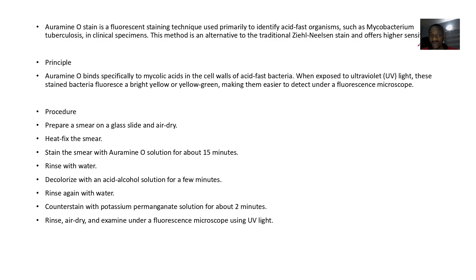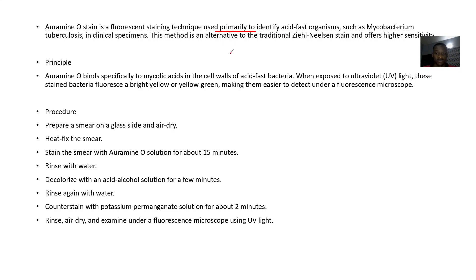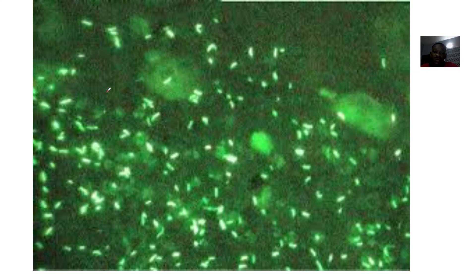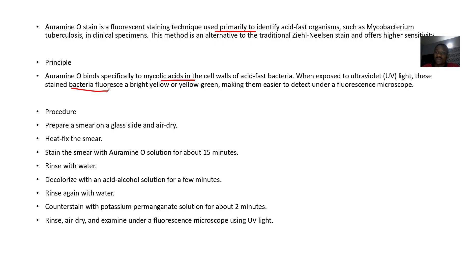The Auramine O stain is a fluorescent staining technique used primarily to identify acid-fast organisms like Mycobacterium tuberculosis in clinical specimens. It binds specifically to mycolic acids in the cell walls of acid-fast bacteria. When exposed to ultraviolet light, these stained bacteria fluoresce with a bright yellow or bright green because of the Auramine O stain binding to their mycolic cell wall.